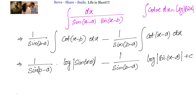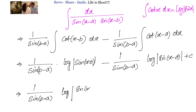In the next step, we combine the logarithms: 1 divided by sin(b-a) times log of sin(x-b) divided by sin(x-a), plus C. This is the final answer.